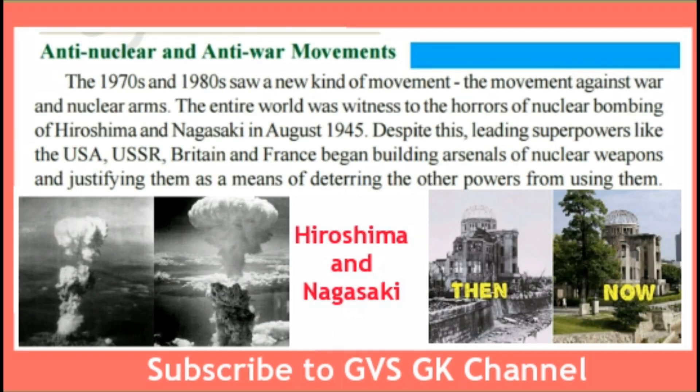Anti-Nuclear and Anti-War Movements: The 1970s and 1980s saw a new kind of movement — the movement against war and nuclear arms. The entire world was witness to the horrors of nuclear bombing of Hiroshima and Nagasaki in August 1945. After revolting against the USSR socialist government and demanding freedom and other resources, people started a movement against war and nuclear arms.